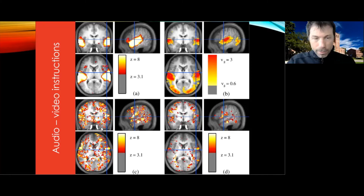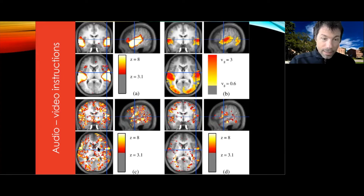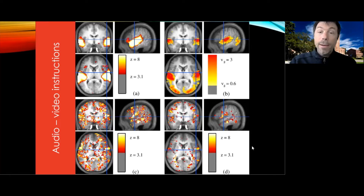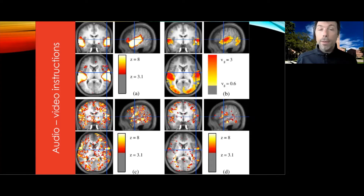Again, using the D'Agostino-Pearson test, you will see there's a lot of non-normality distributed through the brain. In this particular case, some of the non-normality does match areas that are active — both for beta and for beta scaled by the variance estimate. It's very clear, even in this very large group of 81 volunteers, that there are violations of the assumptions of the parametric approach.